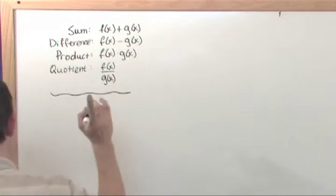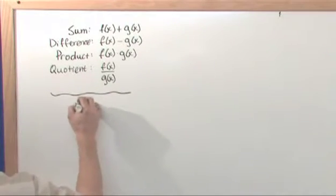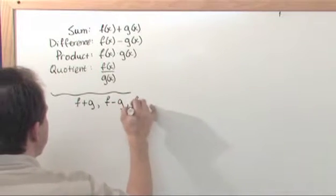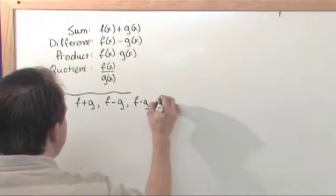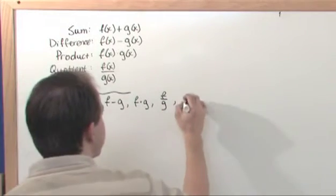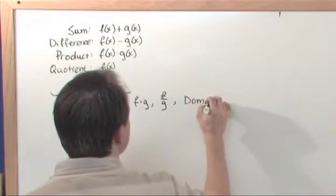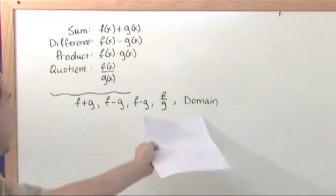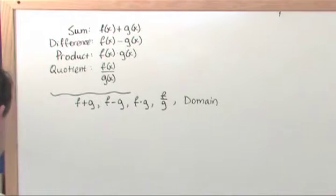So for the following problems we're going to find f plus g, f minus g, f times g, and f over g. And we're also going to find out what the domain of the function is. A lot of problems will ask you to find these combinations of functions and also tell me what the domain is, so we're going to do that here.